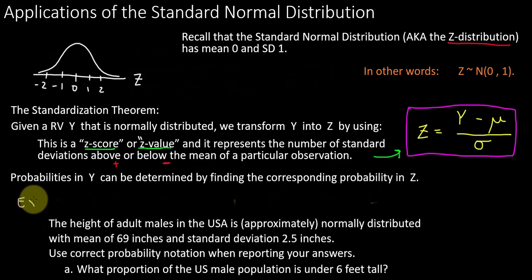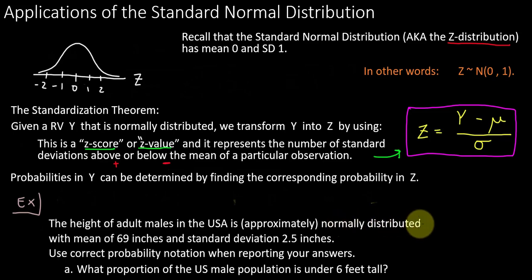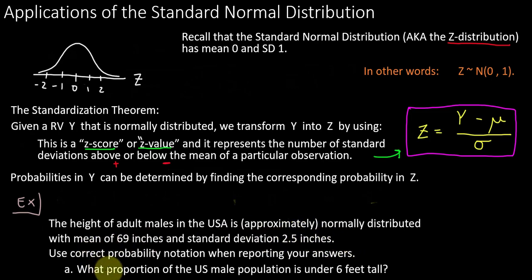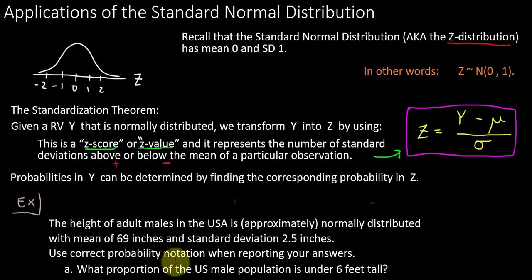Let's look at an example to illustrate this standardization theorem. The height of adult males in the United States is approximately normally distributed with a mean of 69 inches and standard deviation 2.5 inches. We're going to use probability notation when reporting our solutions. Part A states: what proportion of the U.S. male population is under 6 feet tall?